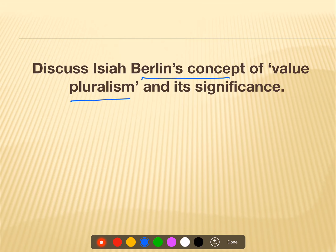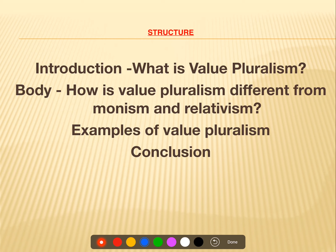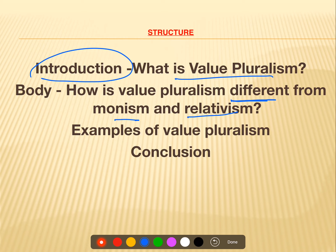Next question: discuss Isaiah Berlin's concept of value pluralism and its significance. For structure, you will say what is value pluralism in the introduction, then in the body tell what value pluralism is and what its significance is. You can tell significance in comparative mode — it is important because it is different from monism and relativism. Then you can quote certain examples and finally conclude your answer.